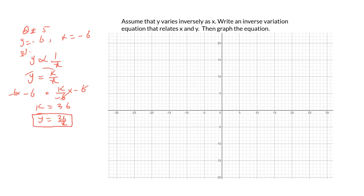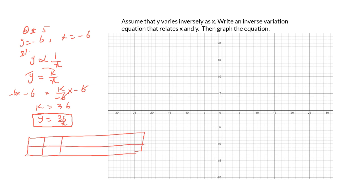This is the solution to the first part. Now we need to figure out the graph of this equation. For this, we have to set up a table of x and y values. Let's take x equals 2, 4, 6, 12, and 18, and figure out the corresponding y values.